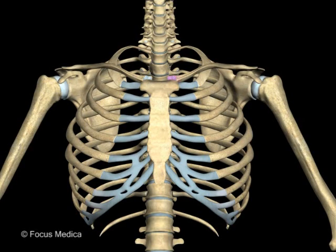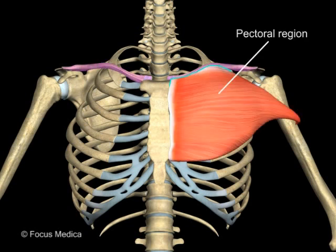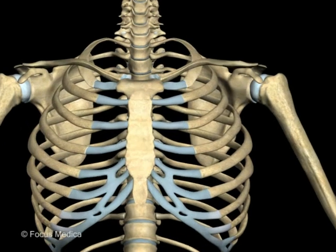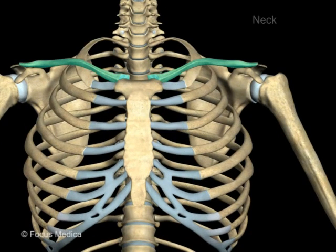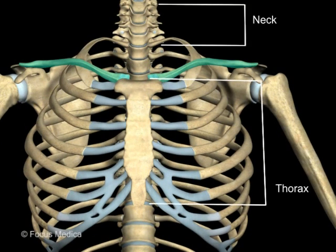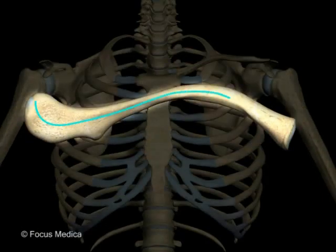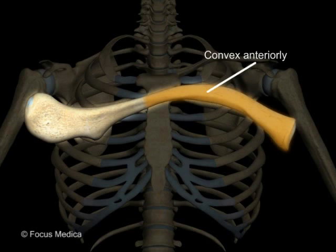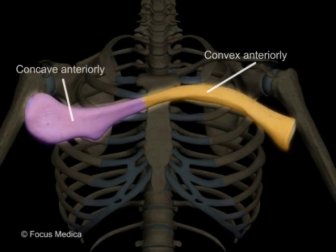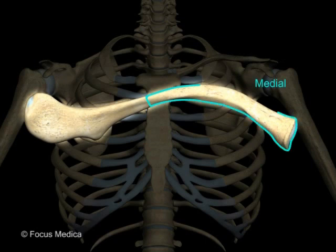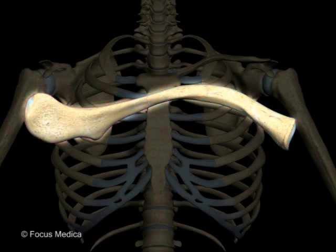The clavicle is a horizontally placed bone forming the upper limit of the pectoral region. It is entirely subcutaneous and demarcates the neck from the thorax. It is a curved S-shaped bone with a medial two-third that is convex anteriorly and a lateral one-third that is concave anteriorly. The medial part is cylindrical while the lateral part is flattened. The clavicle has two ends: sternal and acromial.